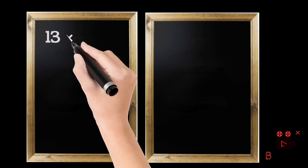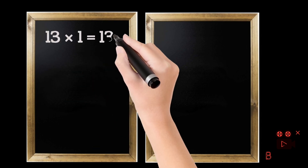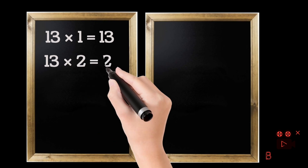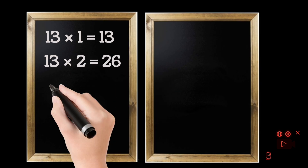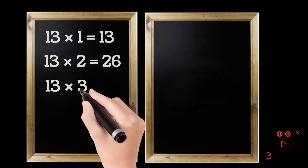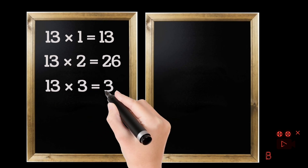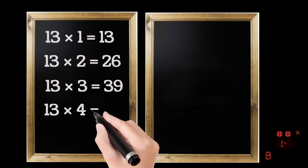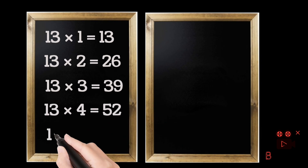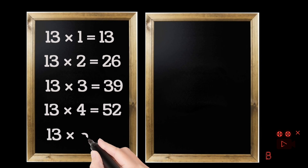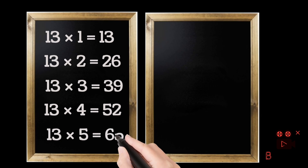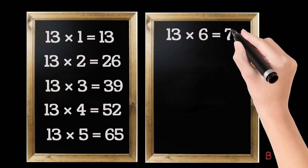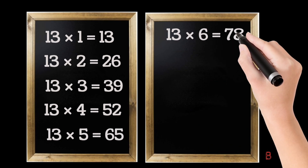13 ones are 13. 13 twos are 26. 13 threes are 39. 13 fours are 52. 13 fives are 65. 13 sixes are 78.